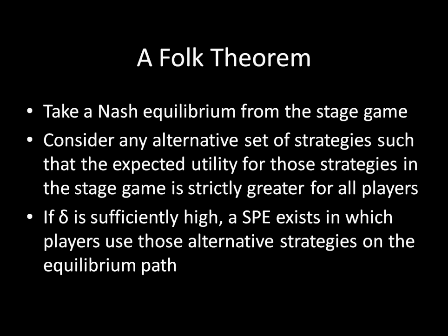Now that we have a particular Nash Equilibrium of the stage game in mind, let's put that aside and think about some other set of strategies for all the players involved, such that those alternative strategies generate an expected utility for all players that is strictly greater than the Nash Equilibrium payoff for the stage game. What this particular Folk Theorem tells us is that if delta, the discount factor, is sufficiently high, a subgame perfect equilibrium exists in which the players use those alternative strategies on the equilibrium path.